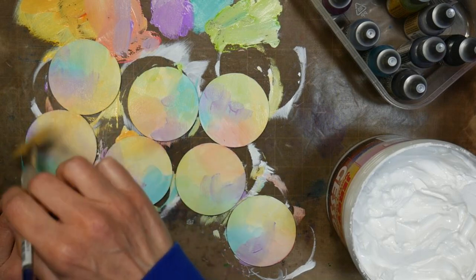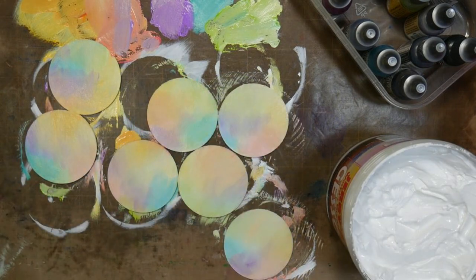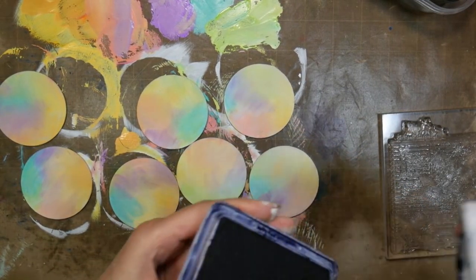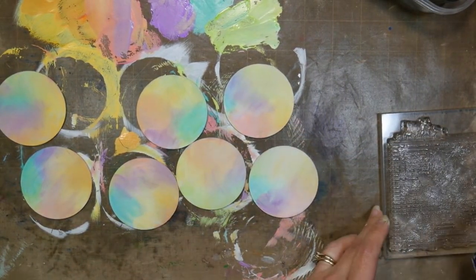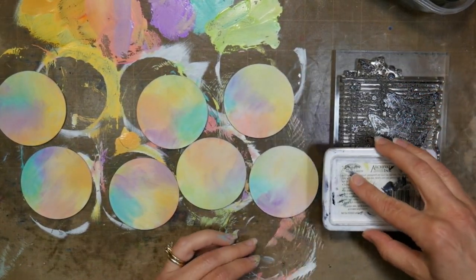You could use acrylic paint if you prefer, like the Paper Artsy Fresco paint which is nice and chalky. The gesso is going to give it that nice chalky finish I want that's going to make it really nice for stamping.